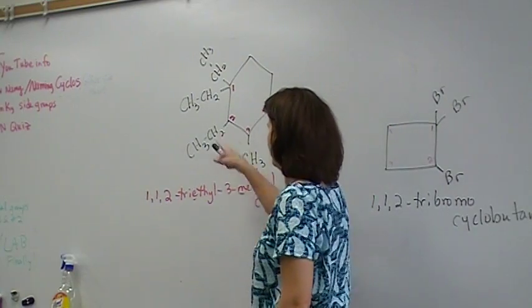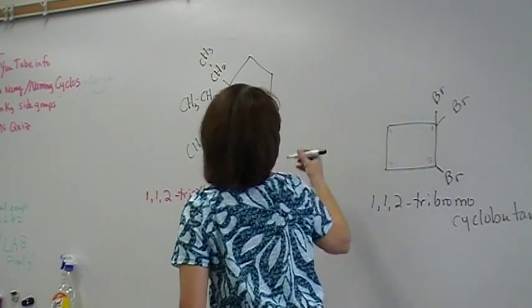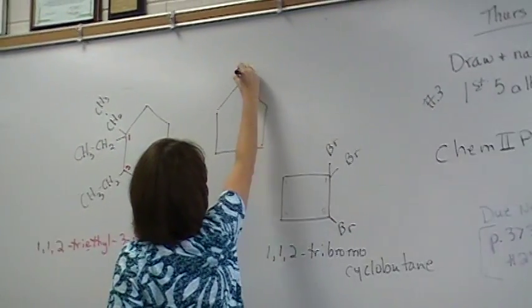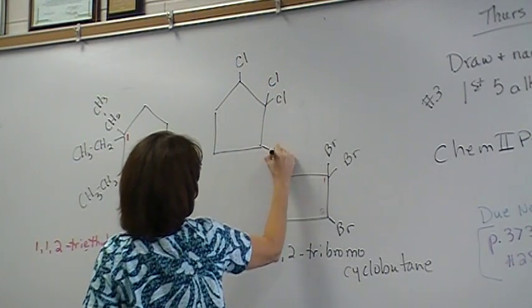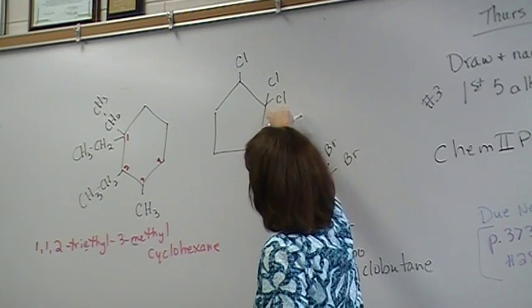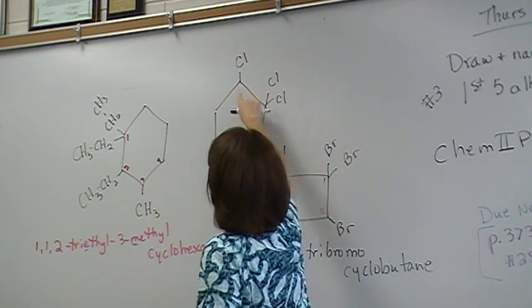Now you're thinking probably, oh, if I see this with 2 on it, that's always where I start. Let me give you one example where that's not true. Say I have, like, a Cl, Cl, Cl, like that. If I go starting right here and go that way, I'm probably going to get bigger numbers than if I say started here or here.